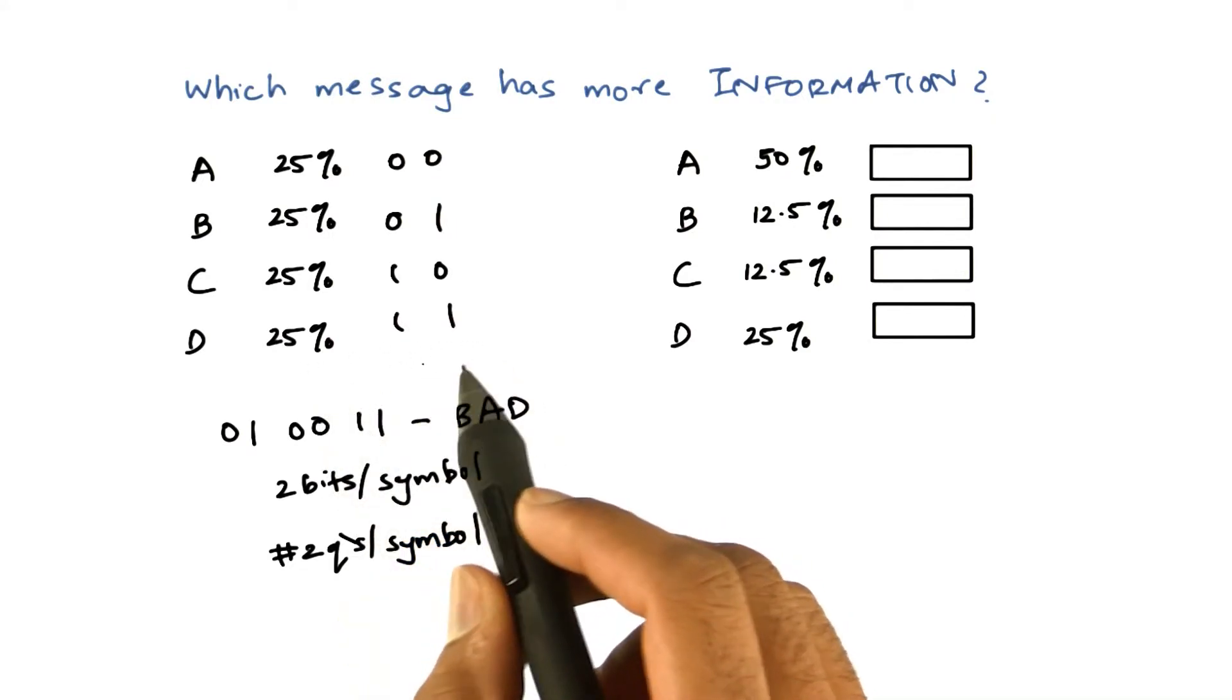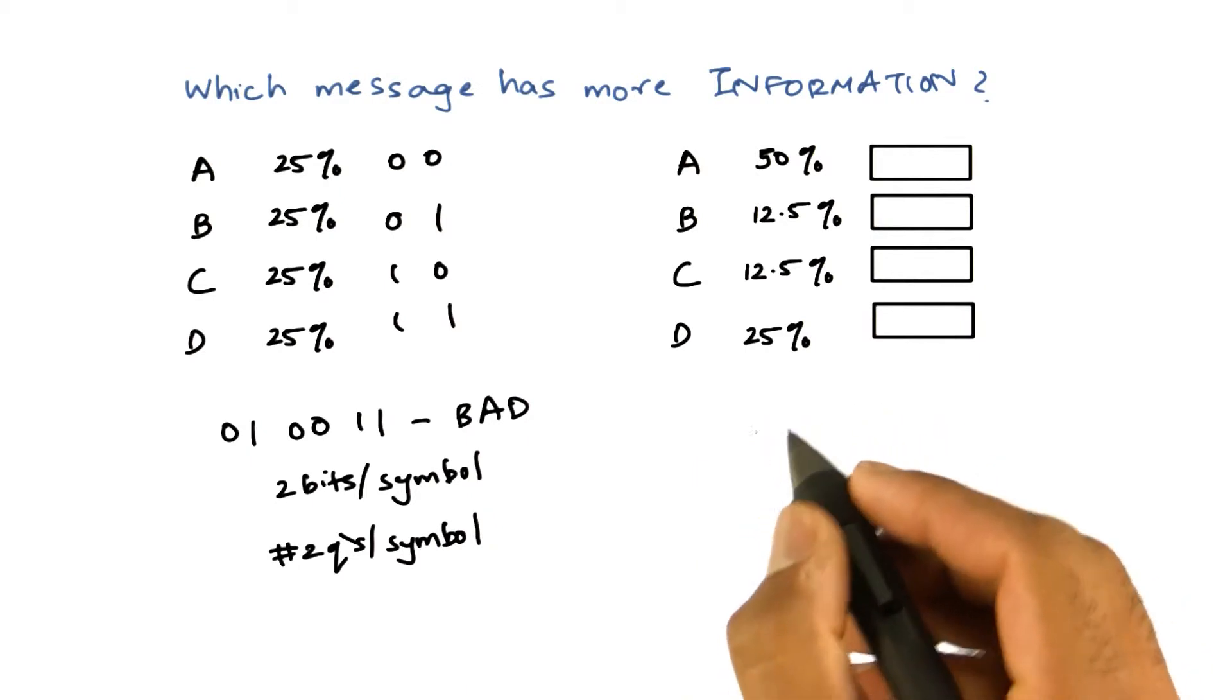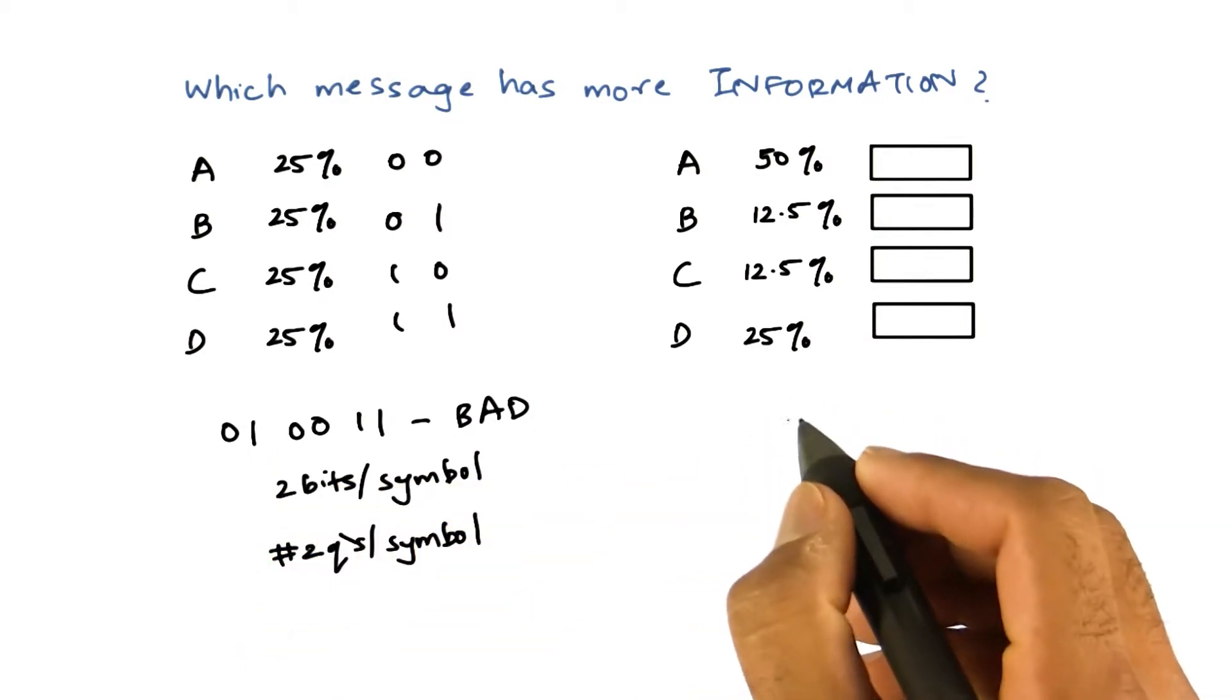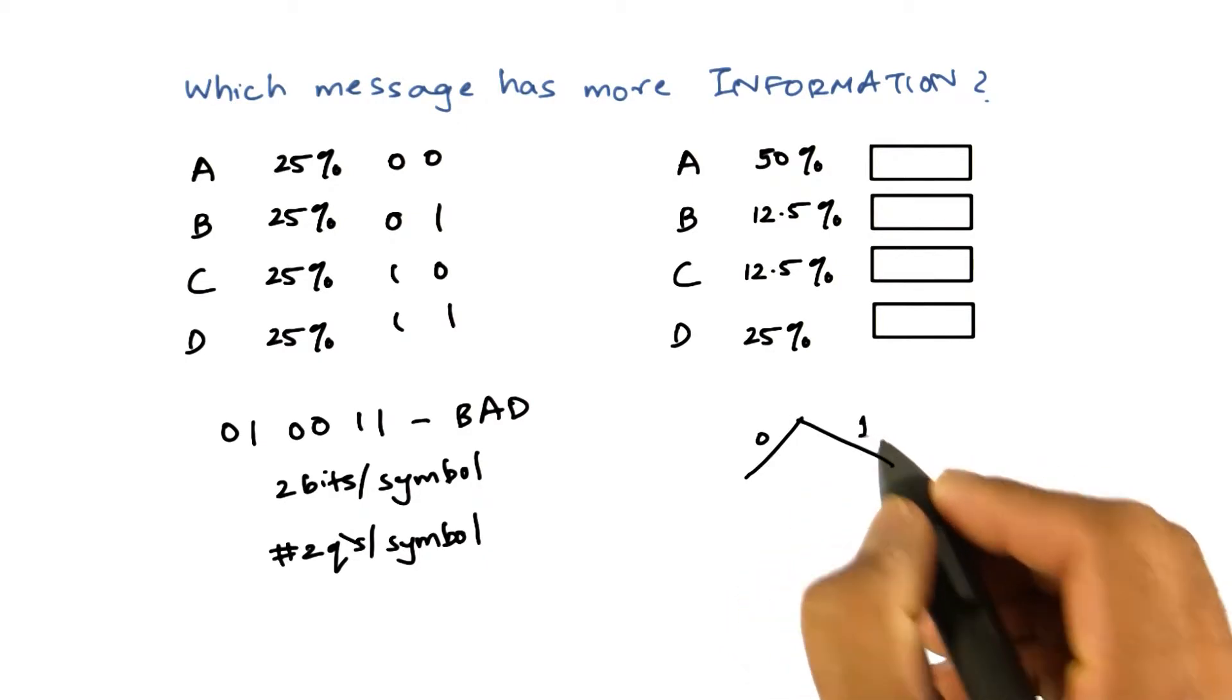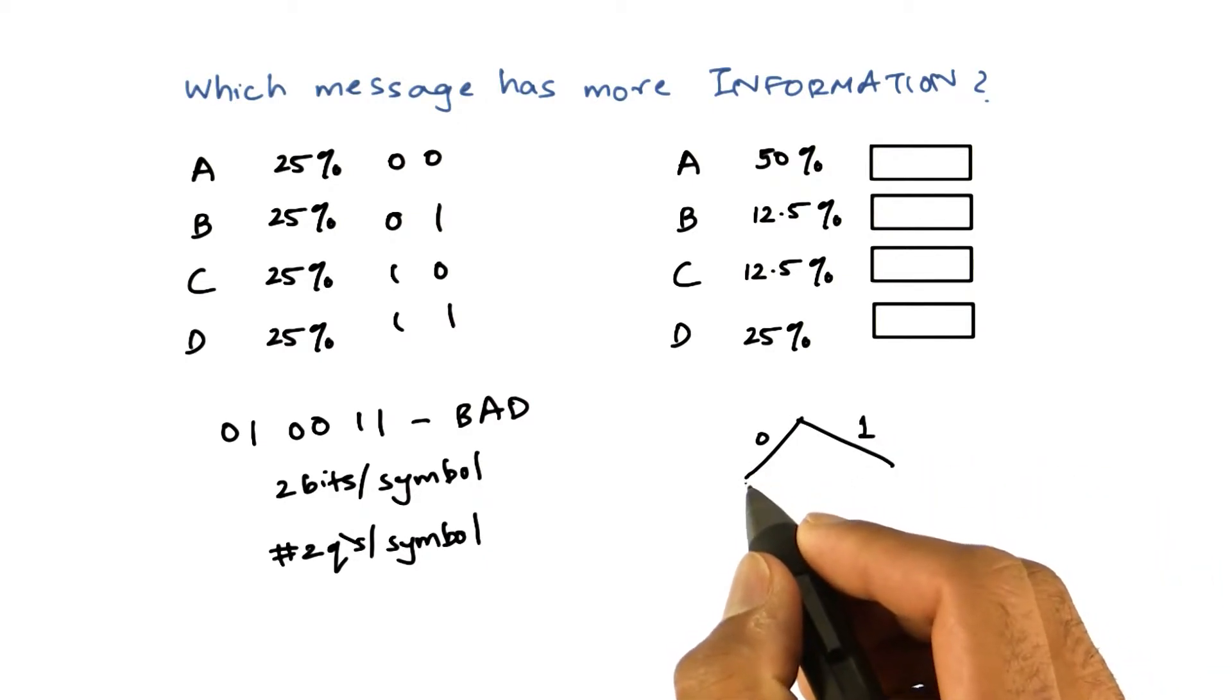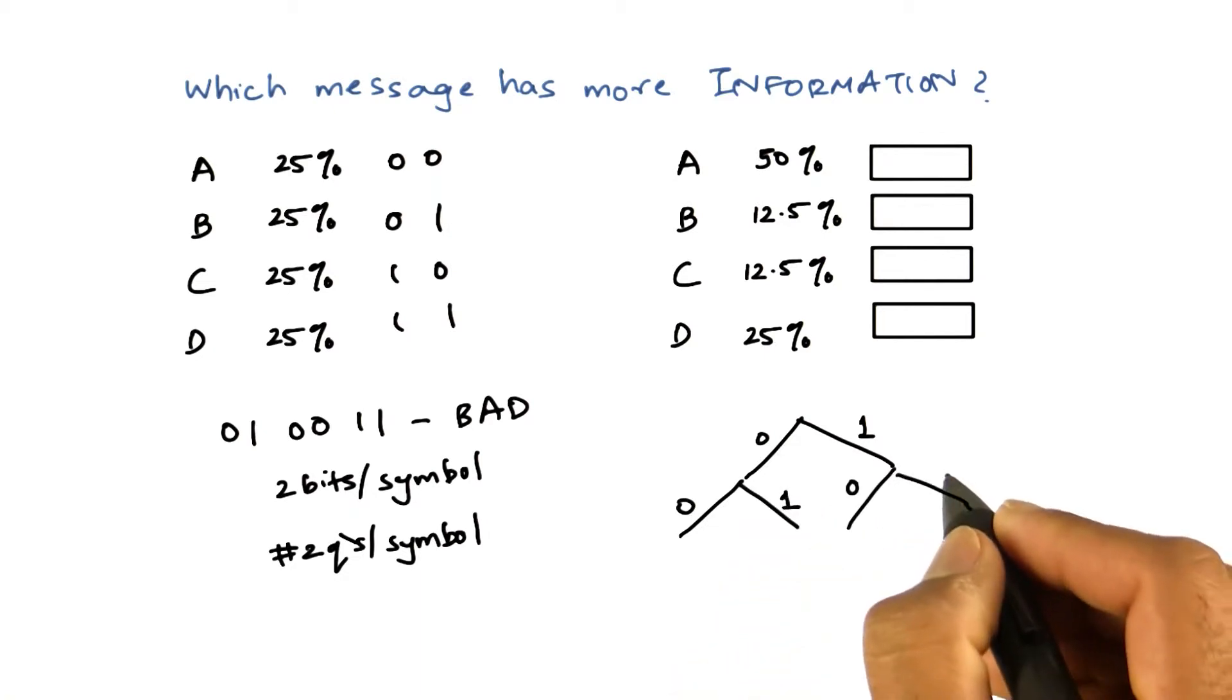So you can represent this bit pattern in a tree. When a new bit comes in, it can be either 0 or 1. If it's a 0, the next symbol can be another 0 or it can be 1, the same case here.